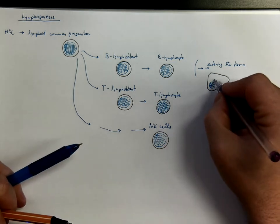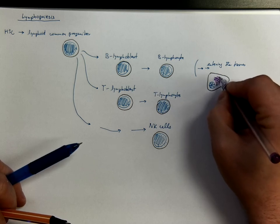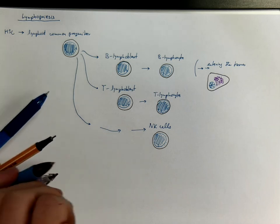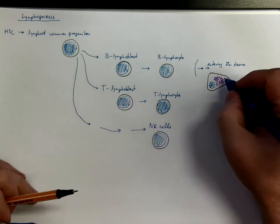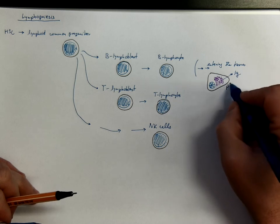This is the same prominent granular endoplasmic reticulum, which is responsible for the basophilic properties. And these are producers of immunoglobulins and are called plasma cells.